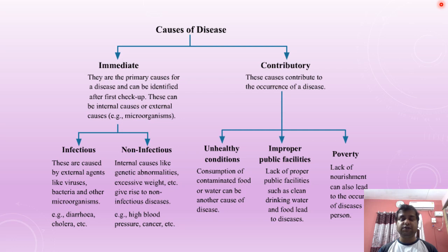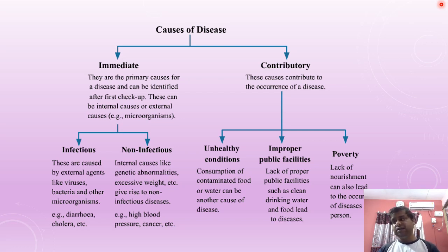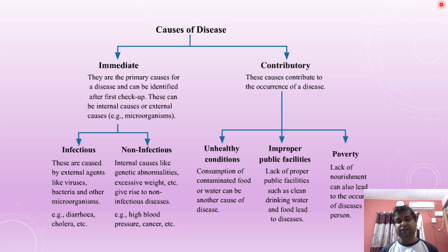Contributory causes contribute to the occurrence of disease over time. For example, the pollution in Delhi contributes to various eye and lung-related problems among people there — many suffer from asthma, experience eye irritation, and some even have heart-related problems because of the pollution. Under immediate causes you have infectious and non-infectious, and under contributory you have unhealthy conditions, improper public facilities, and poverty.